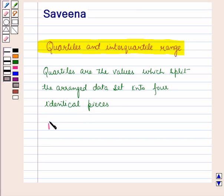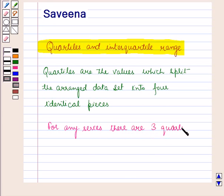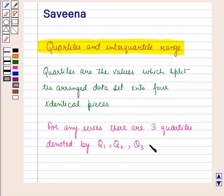For any series, there are three quartiles denoted by Q1, Q2, and Q3. Or we can say there are three points of division, which are Q1, Q2, and Q3.